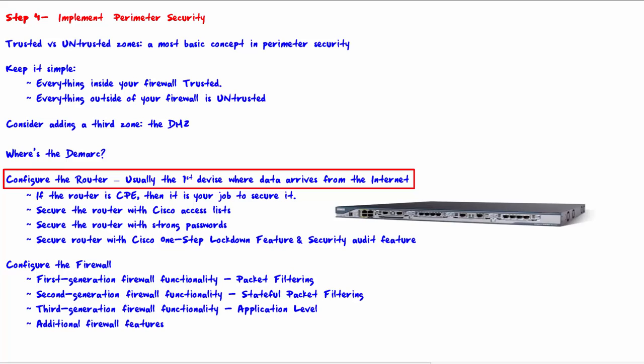The DMARC is usually the first device where data arrives from the internet. If a packet from the untrusted network to the trusted network arrives, the first device it hits is typically the router at the perimeter. Depending upon the type of internet connection — whether it's T1, cable, or other — the router may be CPE or it may be owned by the ISP. If the router is CPE, then it is your job to secure it.